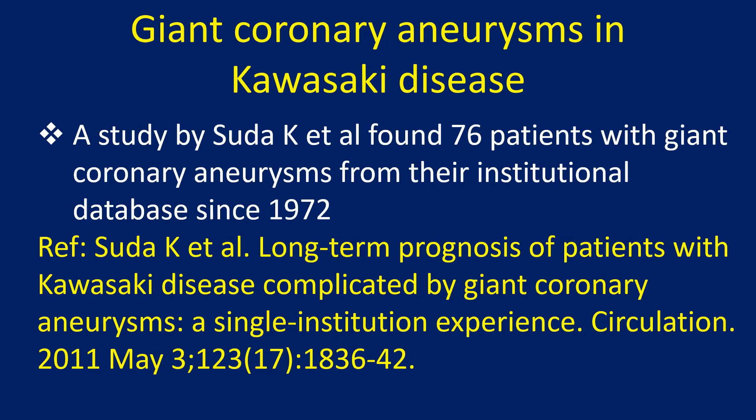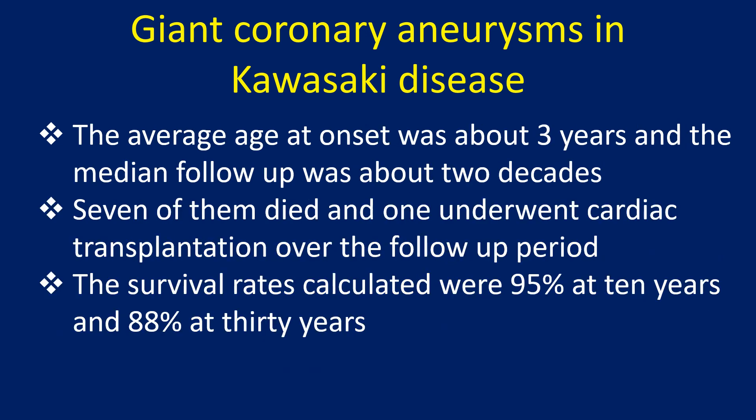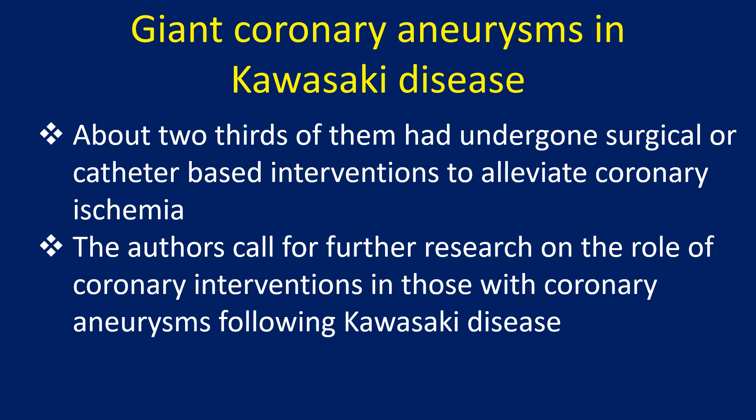A study by Sudha and associates found 76 patients with giant coronary aneurysms from their institutional database since 1972. The average age at onset was about 3 years and the median follow-up was about 2 decades. Seven of them died and one underwent cardiac transplantation over the follow-up period. Survival rates were 95% at 10 years and 88% at 30 years. About two thirds had undergone surgical or catheter-based interventions to alleviate coronary ischemia. The authors called for further research on the role of coronary interventions in those with aneurysms following Kawasaki disease.